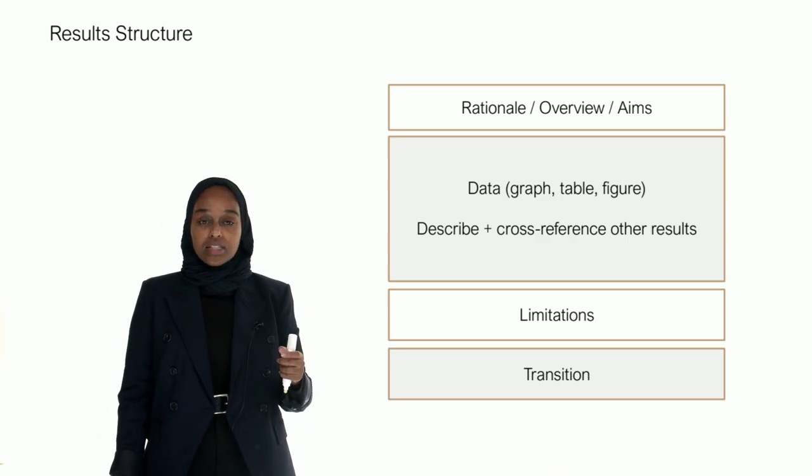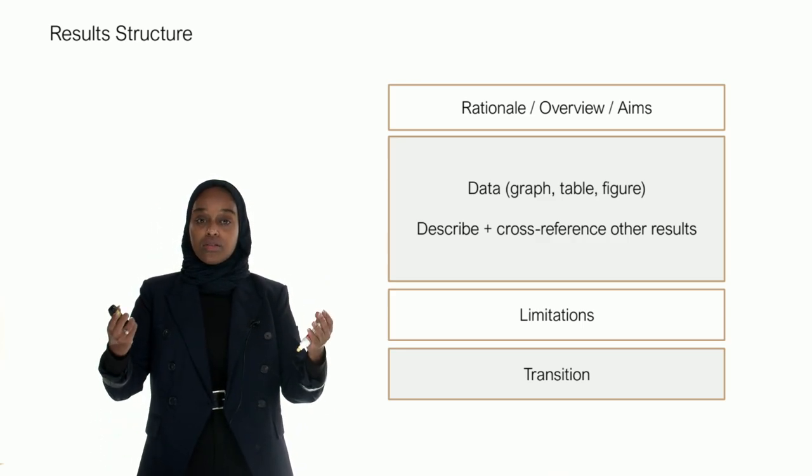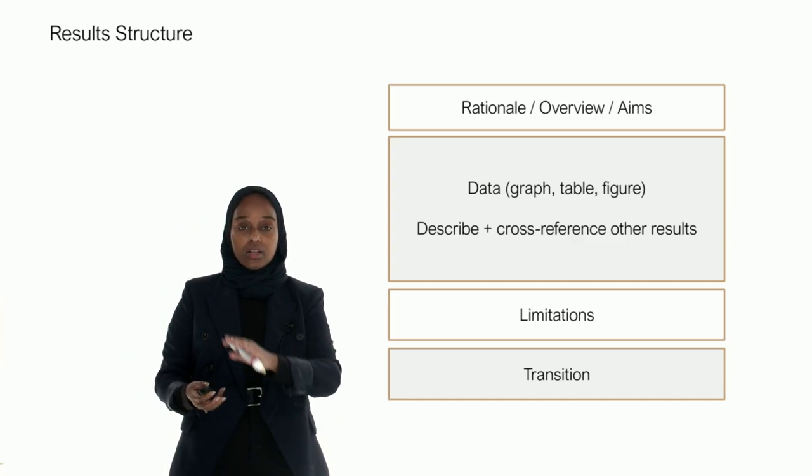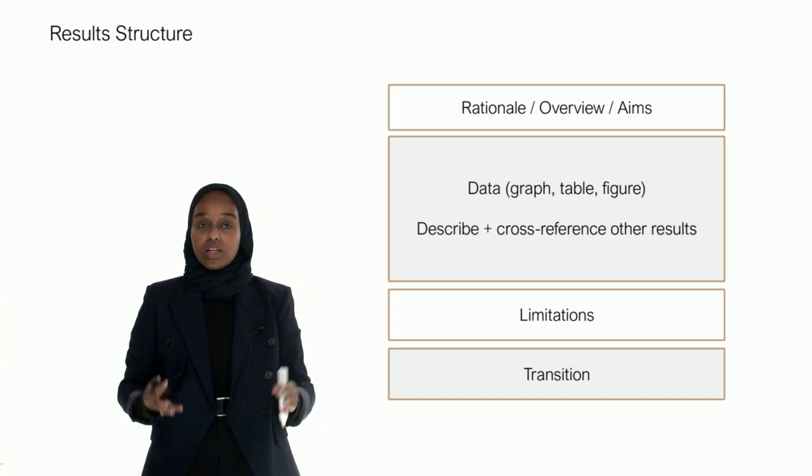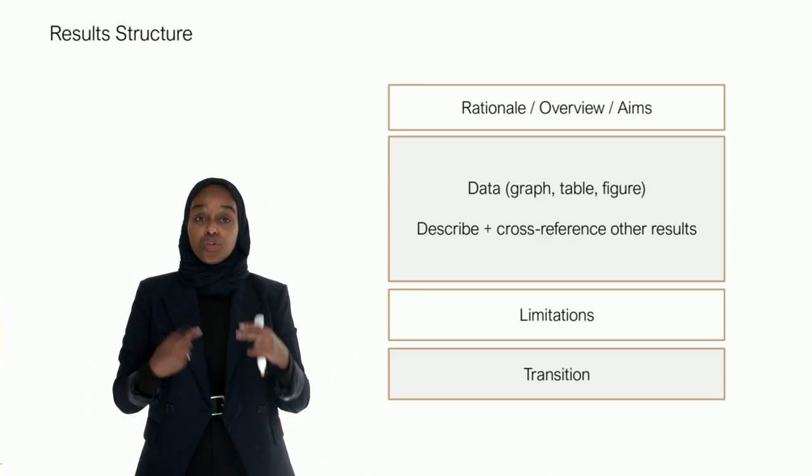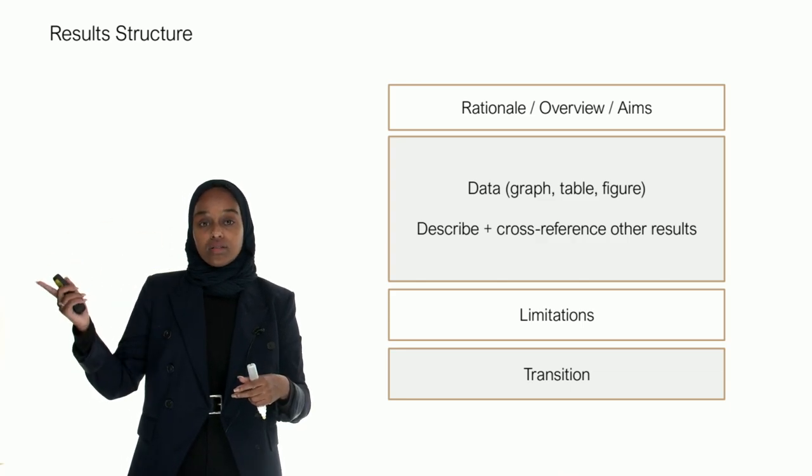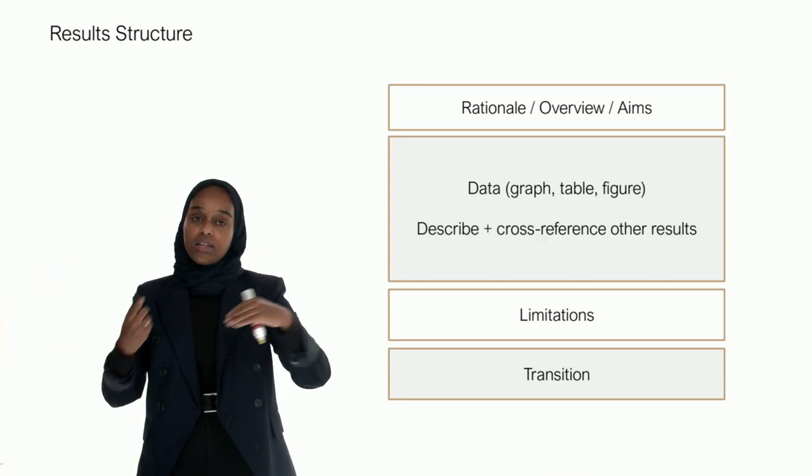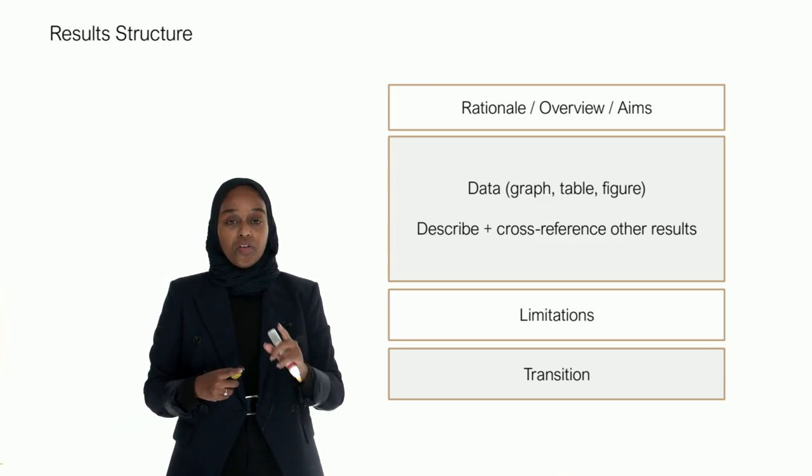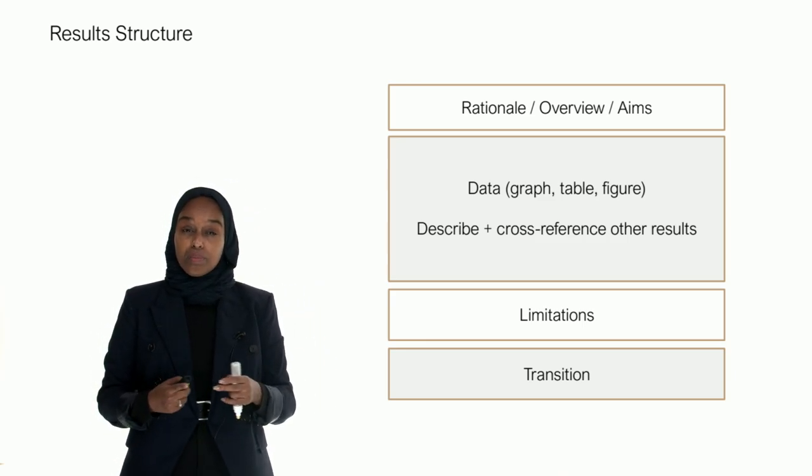The second section is your data. So this is where you actually say right here's figure one. You want to point the reader towards figure one. This is what it is. You're describing it. You're cross-referencing it with other results as well. That can include your results and say if you look at the last chapter this is what we did and now this is what we're doing. And you can also very briefly cross-reference other papers but very briefly.